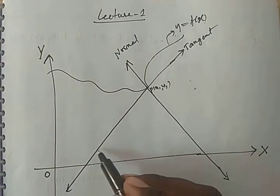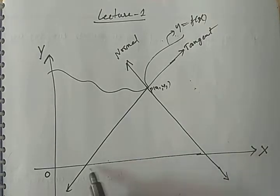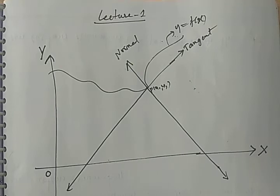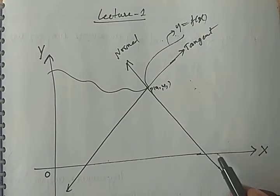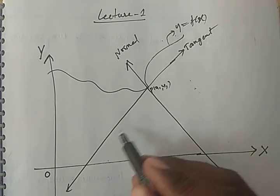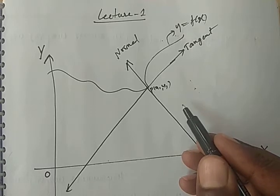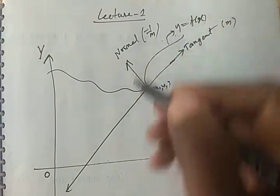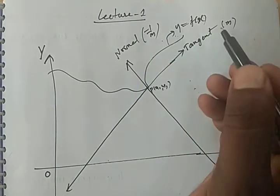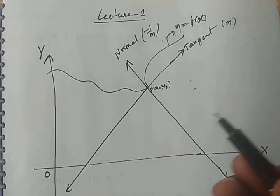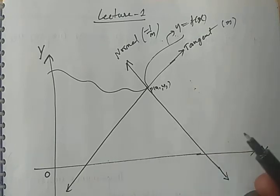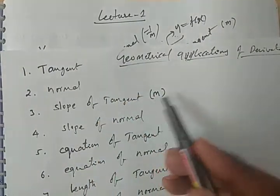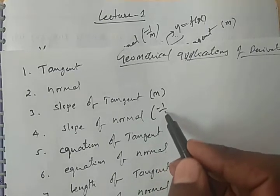Next is slope of tangent. We have some angle theta between the x-axis and the tangent line. Tan of this theta is the slope of the tangent. If the slope of the tangent is m, then the slope of normal is minus 1 by m, because these two are perpendicular lines. If we take the product of their slopes, we get minus 1. The product of slopes of perpendicular lines equals minus 1.